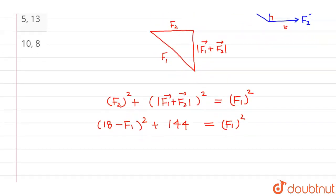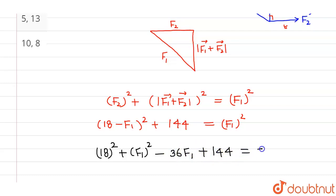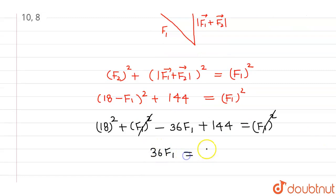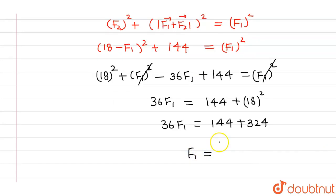Expanding (18 minus F1) squared gives 324 plus F1 squared minus 36 F1. Adding 144: 324 plus F1 squared minus 36 F1 plus 144 equals F1 squared. The F1 squared terms cancel, giving 36 F1 equals 144 plus 324, which is 468. Dividing by 36, F1 equals 13.